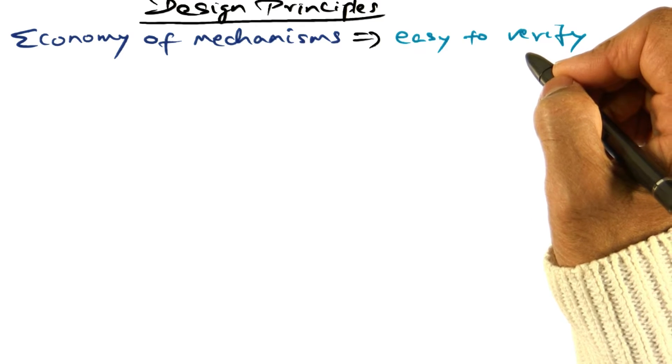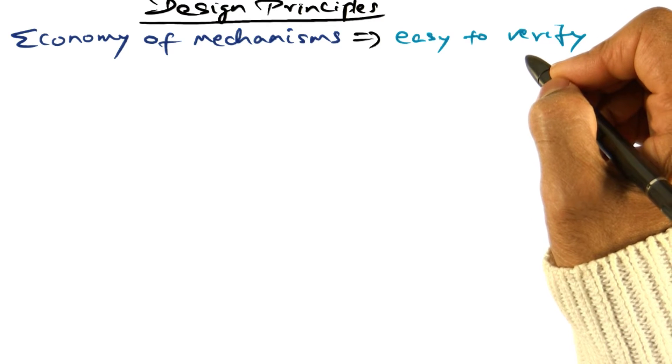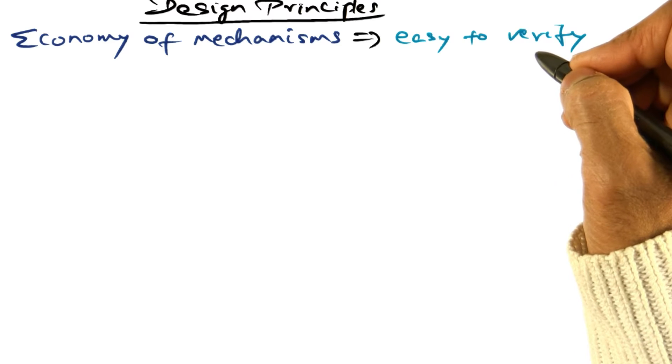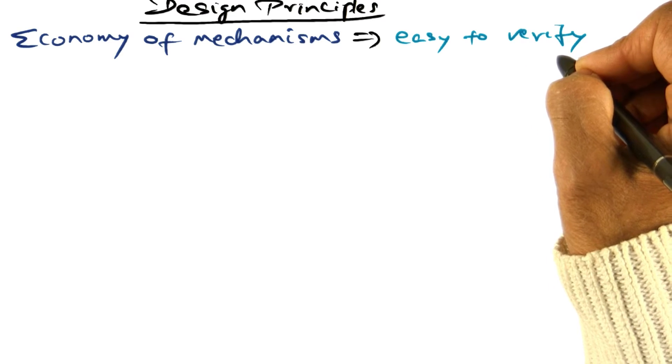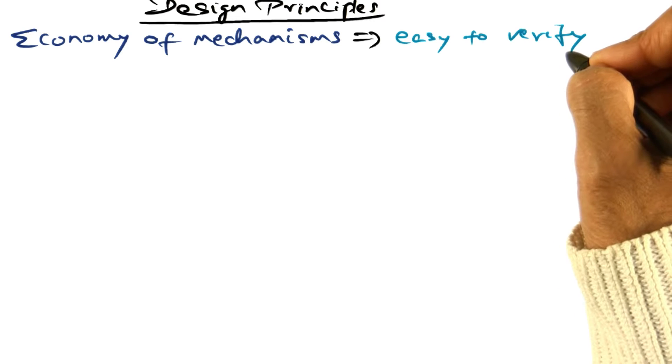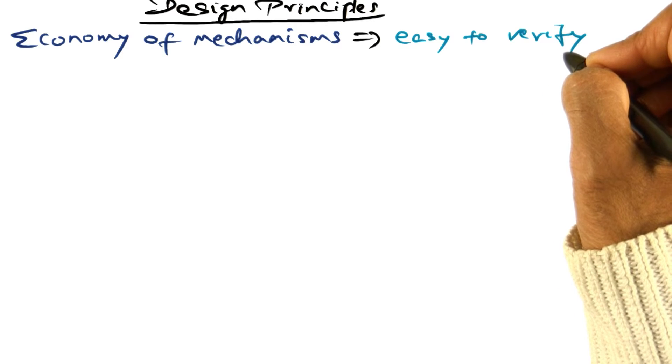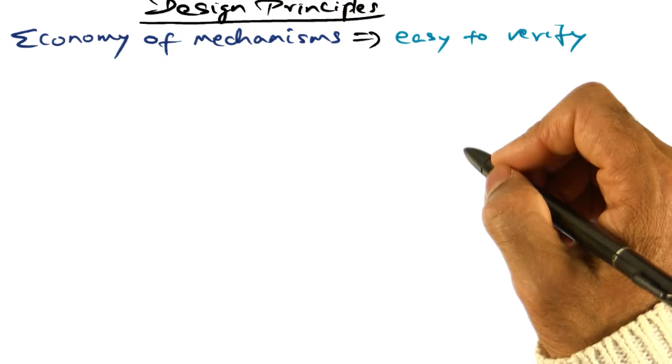And by that, what is meant is that the mechanism should be easy enough so that it can be verified, whether it works or not. That's important, economy of mechanisms.